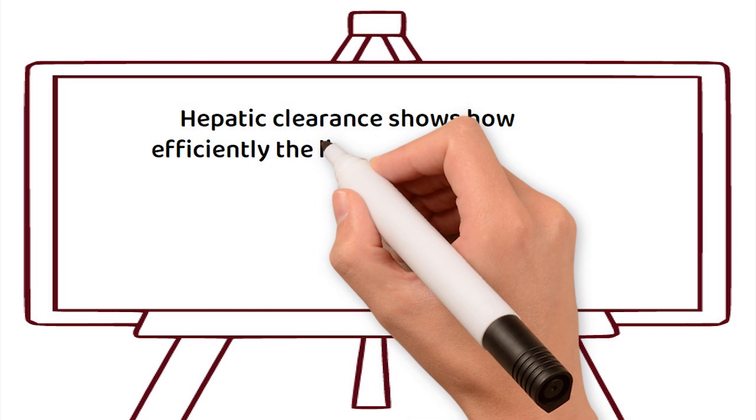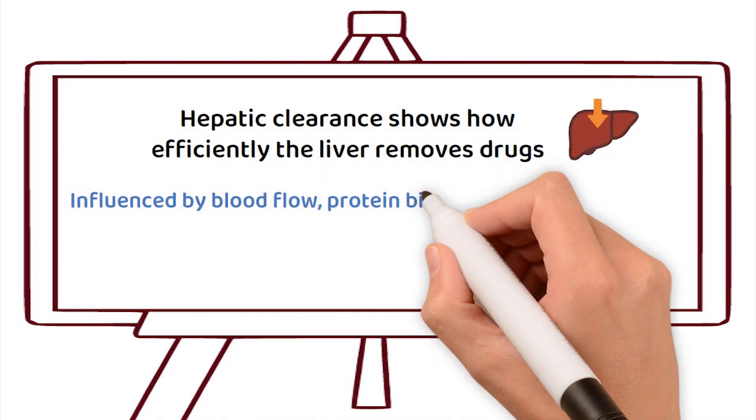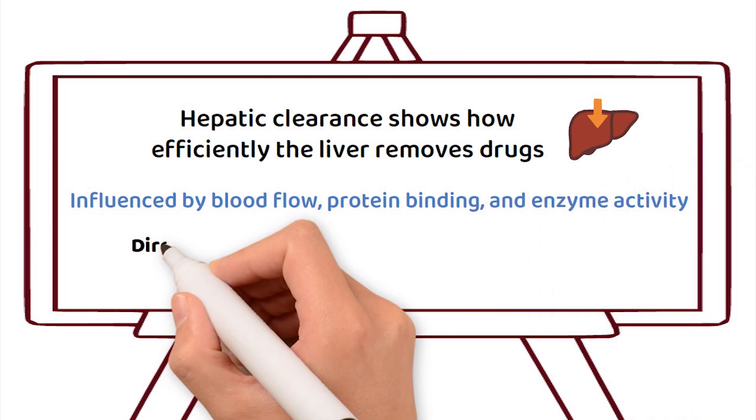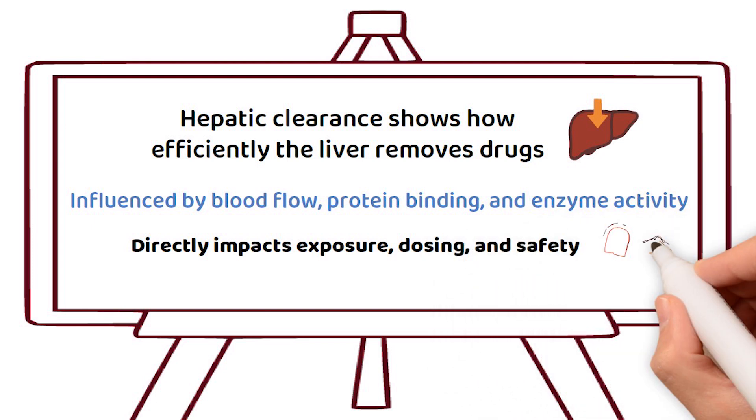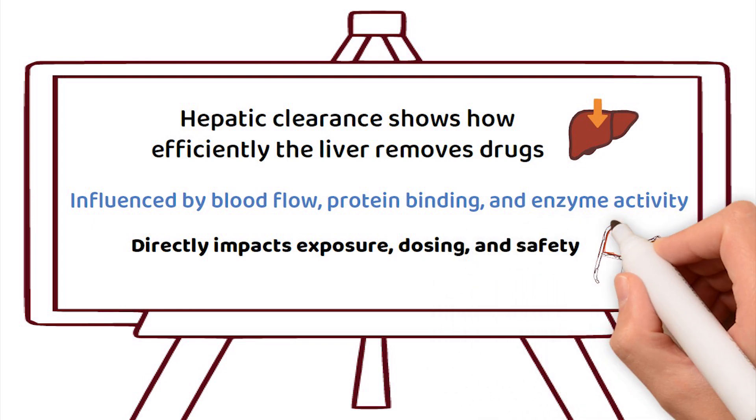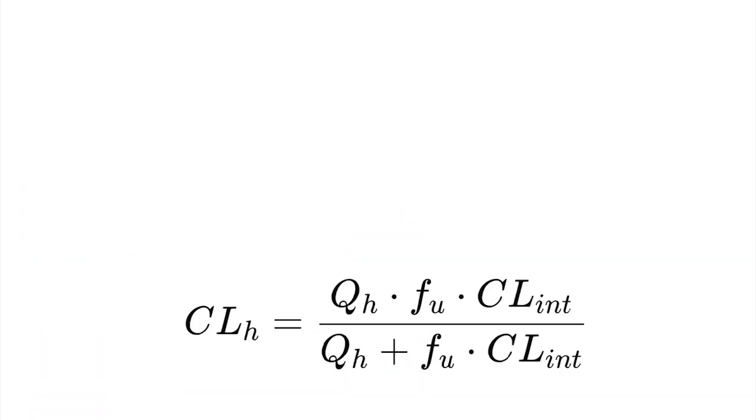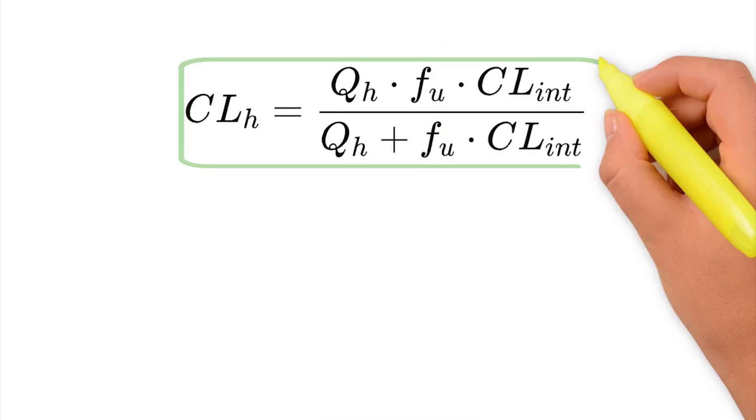To sum up, hepatic clearance tells us how well the liver removes drugs. It's determined by blood flow, protein binding, and liver enzyme activity. It predicts how disease, drug interactions, or enzyme activity changes affect drug exposure, and thus it directly affects dosing, bioavailability, and safety. Master this equation, and you'll master one of the most important tools in clinical pharmacokinetics.